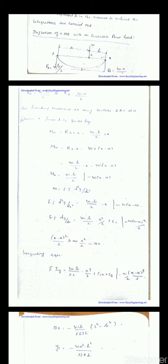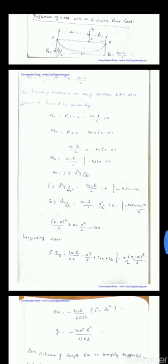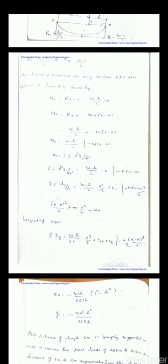So first we are going to derive the equation for M suffix X maximum bending moment. MX equals RA into X. It is a distance, so RA is the W into B divided by capital L into X. Next, MX equals RA into X minus W into X minus A, equal to WB divided by L into X minus W into X minus A.